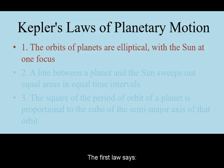The first law says that the shape of the orbit of a planet around the Sun is an ellipse with the Sun at one focus.